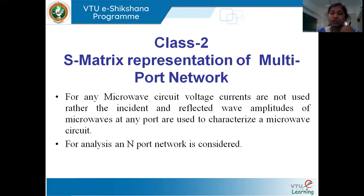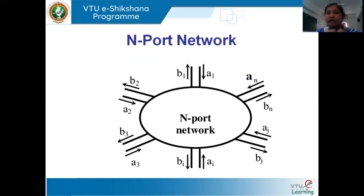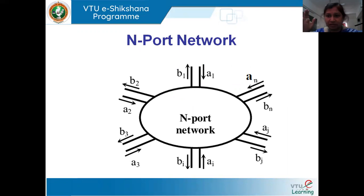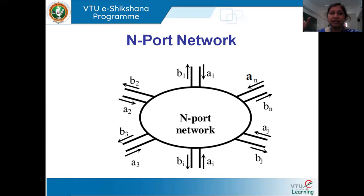In today's class, let us find out how we can represent a microwave multiport network, what parameters we are going to use, and how this parameter gives us a relationship between the incident wave and the reflected wave. In any microwave circuit or device, whenever we are transmitting a signal, we have three parts: the source, the transmission line, and the device to which we are delivering the signal.